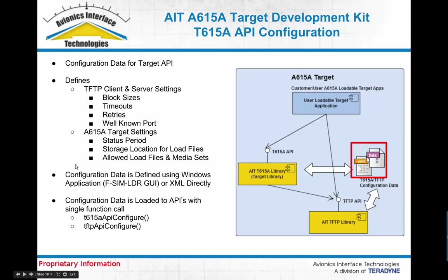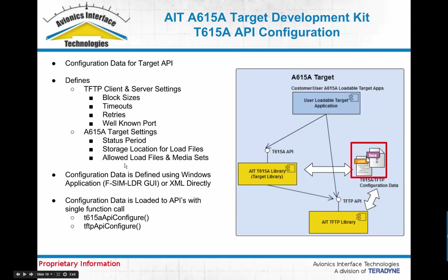The same type of parameters apply for the 615A library — things like the status period, how often the library sends status information to the data loader, and also the storage location for load files, so where to store a received LSP on the local avionics system. We also provide an option where the API can be pre-programmed with the list of LSPs it's able to accept, taking the load off the application to decide in real time whether to accept a requested LSP — that decision is part of the API configuration.